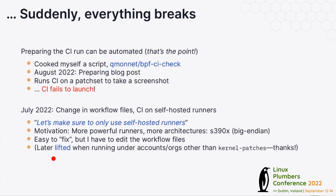The motivation for that change was totally legitimate — to get more powerful runners, avoid hitting timeouts, and to be able to run on different architectures, since GitHub only offers x86 runners. With that change it became possible to run on s390 machines as well. It's easy to work around on my side, but it does mean editing the YAML files, which I'd prefer not to do. This has since been addressed: the constraint has been lifted when the CI is not run from the official kernel-patches GitHub organization. So if I run the CI on my own account, the self-hosted runner enforcement no longer applies and I can again just copy the files and run.